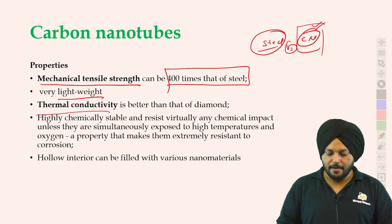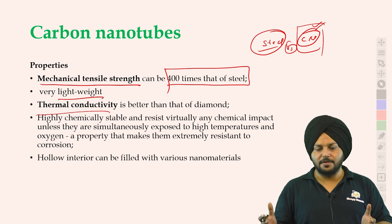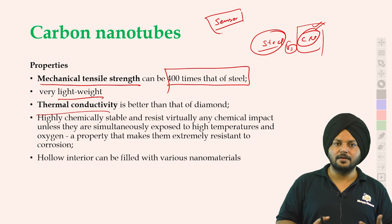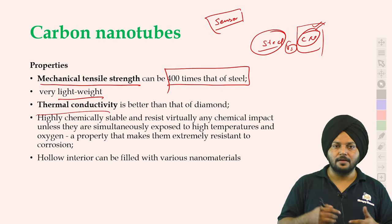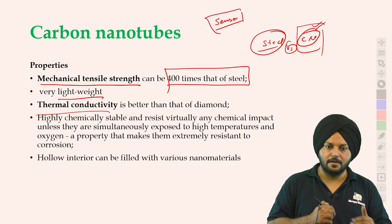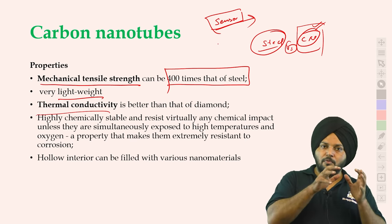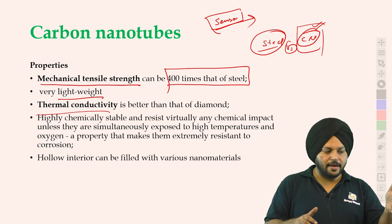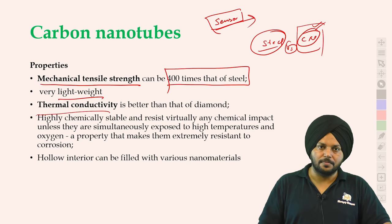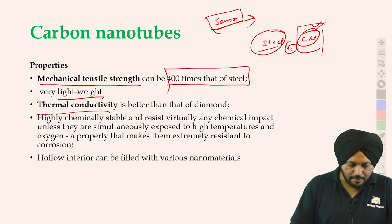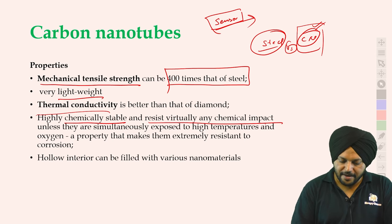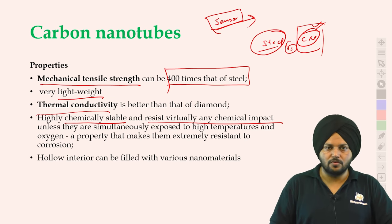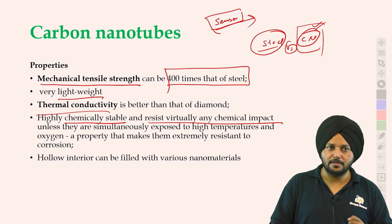Thermal conductivity — temperature एक जगह से दूसरी जगह जाना। जैसे हमने कोई sensor बनाना हो जो temperature थोड़ा भी बदले तो बता सके। Carbon nanotube temperature को पूरा conduct करता है, एक जगह से heat को पूरी तरह दूसरी जगह transmit करता है। यह भी एक अच्छी property है। Chemically stable भी है — virtually any chemical impact को यह resist करता है। इसमें बहुत जल्दी corrosion नहीं होता — यह भी एक plus point है।